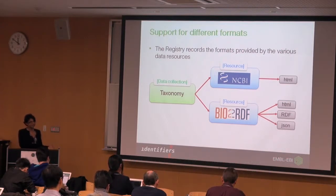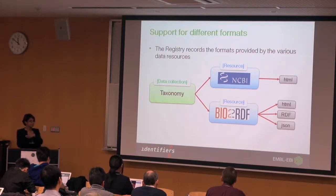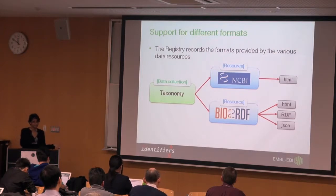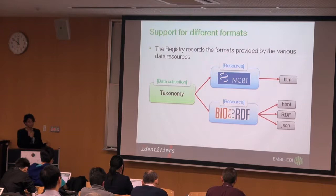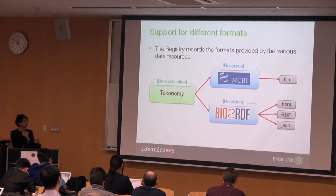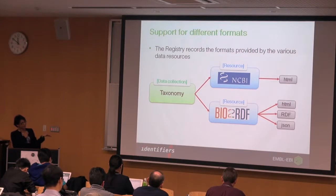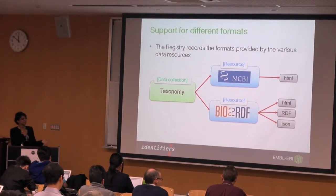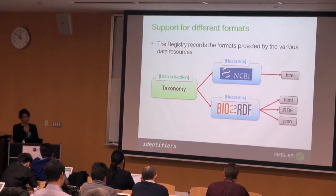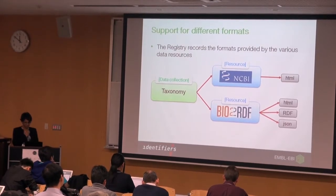The idea is that at some point you could append .rdf to the identifiers.org URI and it will give you RDF for the entity. At the moment the RDF is written for 'info', and that RDF is actually the RDF for the registry, not for the actual entity. So this is not currently provided. We didn't have this information before, but now we're adding it so users will be able to get RDF using Identifiers.org as well.